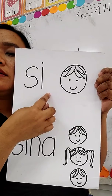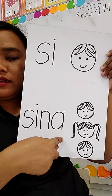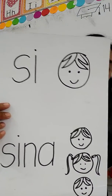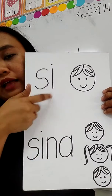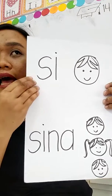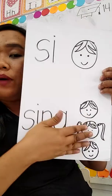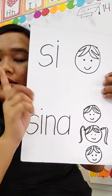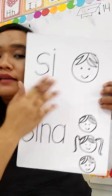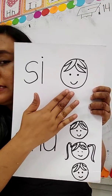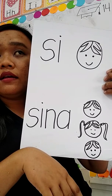Review lang tayo konti. Si — sina. Pag sinabi mong si, katulad ng picture, ilang tao ang tinutukoy? Isa lang. Tandaan nyo, pag si at sina, ang tinutukoy diyan ay tao — hindi bagay, kundi tao lang. Si — isang tao lang ang tinutukoy. Sina — dalawa, tatlo, or mas marami sa isa. Basta hindi siya isa. Pwedeng two, three, four, pwedeng one hundred, basta hindi isa. Kasi pag isa lang — si. Sina — marami, dalawa, tatlo, apat.